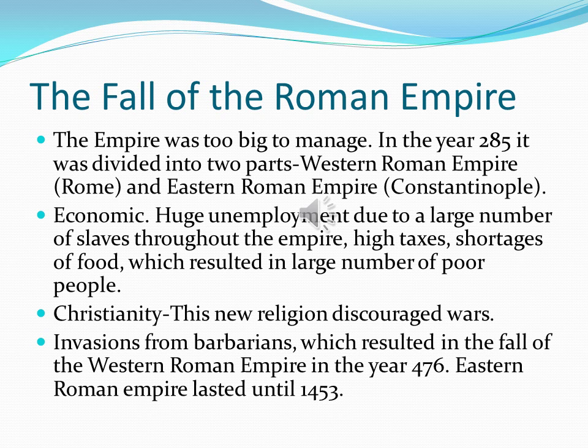Now we're going to discuss the fall of the Roman Empire. The empire was too big to manage. In the year 285, it was divided into two parts: the Western Roman Empire, located in Rome, and the Eastern Roman Empire, located in Constantinople. One of the problems it faced was economic: there was huge unemployment because there were a lot of slaves throughout the empire, and slaves work for free. This discouraged people from hiring real Romans whom they had to pay a salary. Taxes were extremely high, resulting in less money for people to spend, which further destroyed the Roman economy and resulted in a large number of poor people.